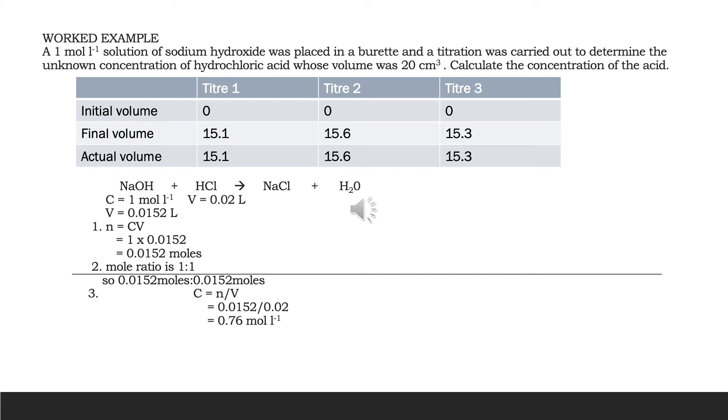So the first thing is I need to average those. So I'm going to add them both together and divide them by two. And that gives me a volume of 15.2 cubic centimetres. But remember I need to now convert that to litres. So I divide that by a thousand. So what I've now got is a concentration and volume for sodium hydroxide. And that's my starting point.